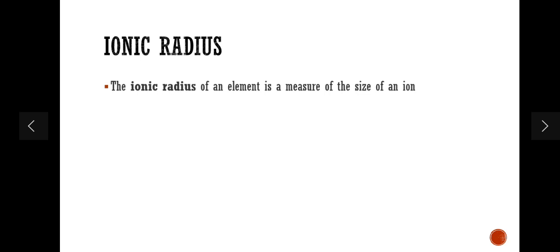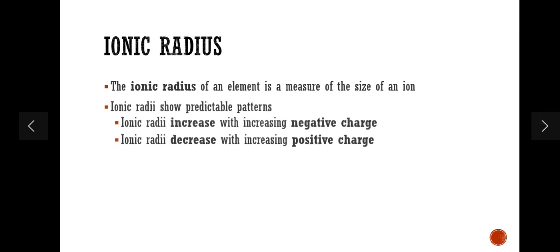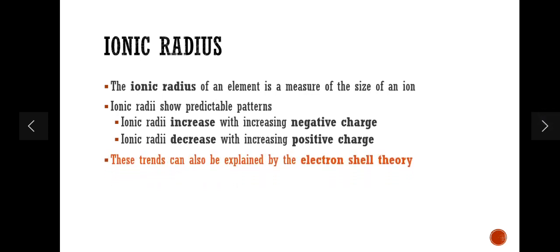When we were talking about atomic radius, atomic radii generally decrease across each period and decrease down each group. Now with ionic radius, there is something different. Ionic radii show predictable patterns but in a different context: ionic radii increase with increasing negative charge, and ionic radii decrease with increasing positive charge. These trends can also be explained by the electron shell theory.